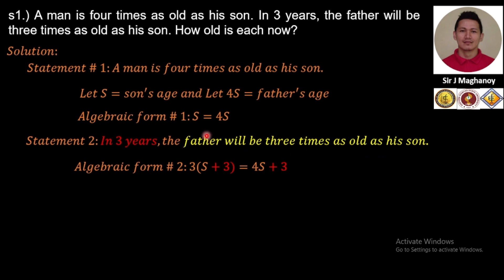Three times will not be multiplied on the father; it will be on his son. Three times as old as his son means three times his son. What is the age of his son?